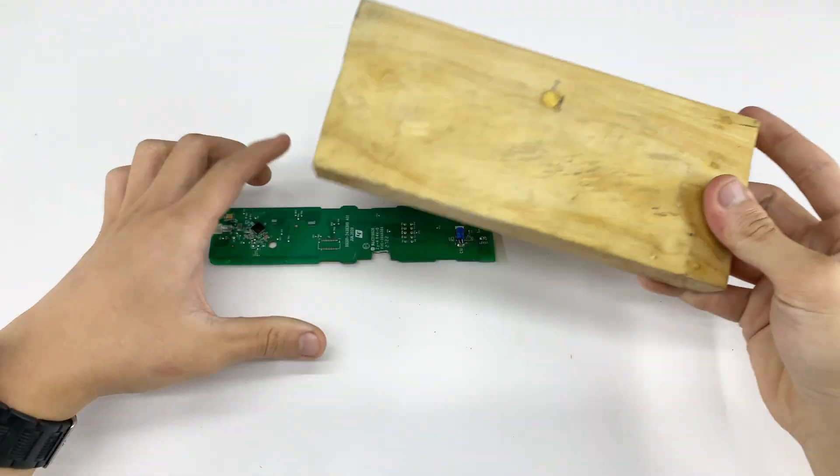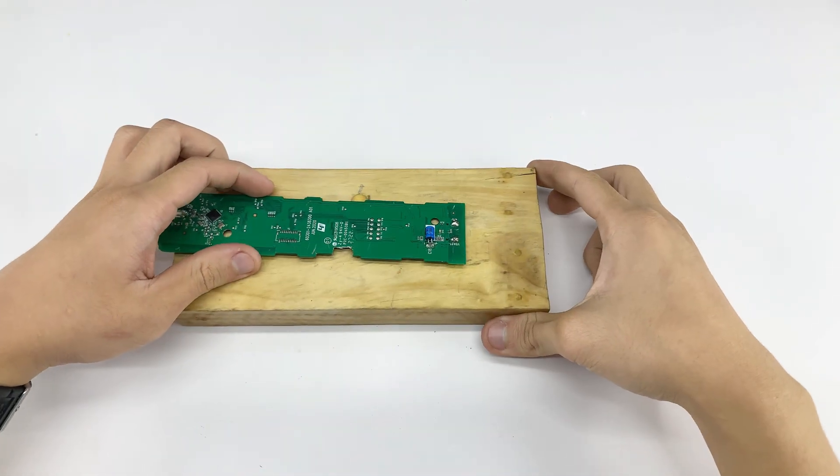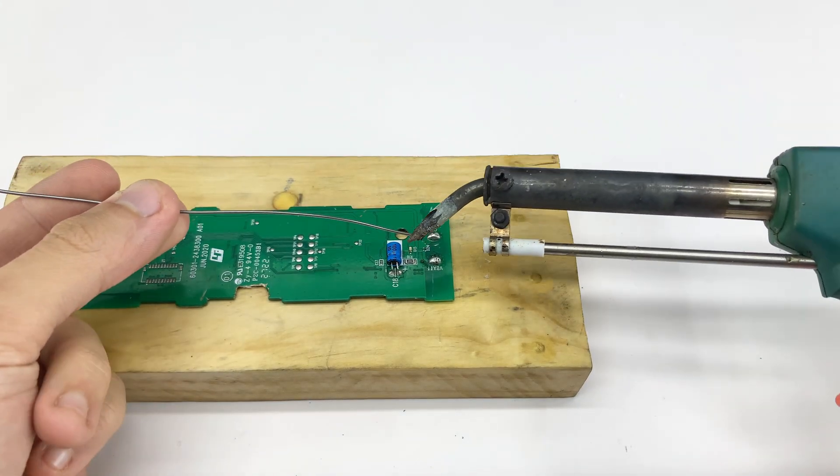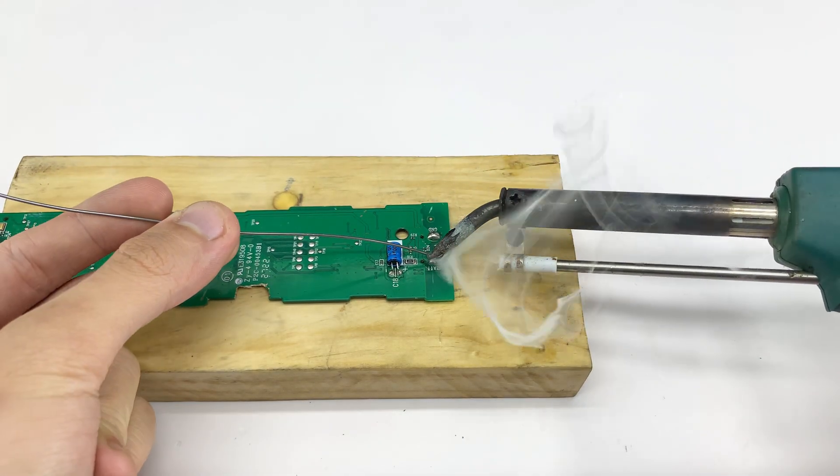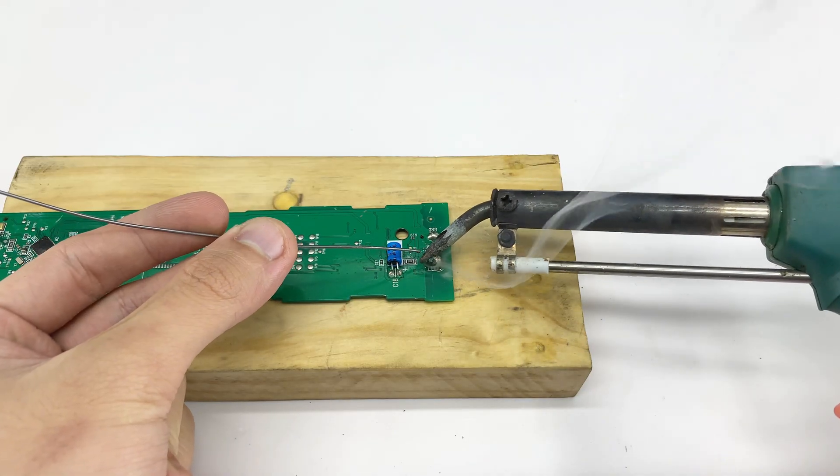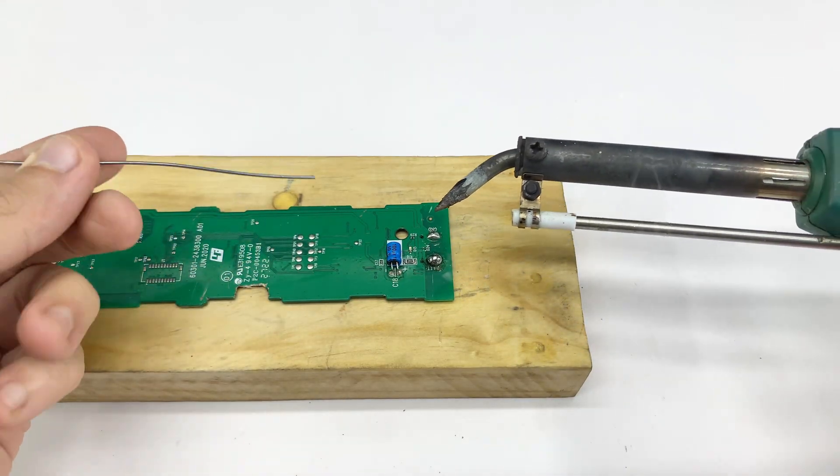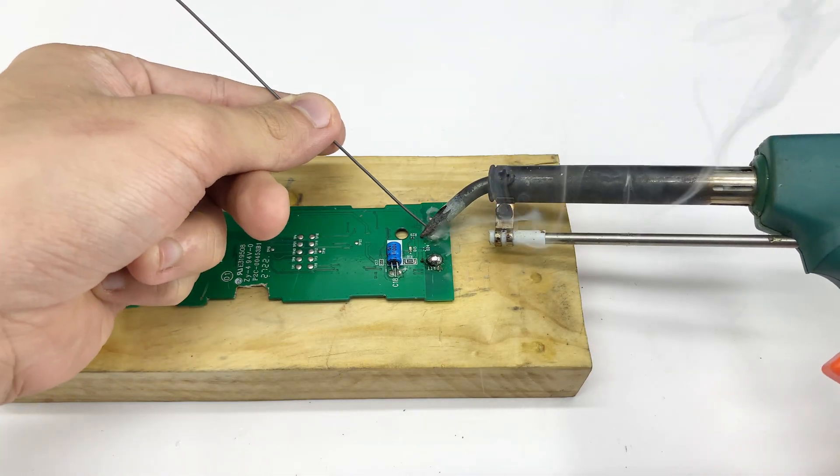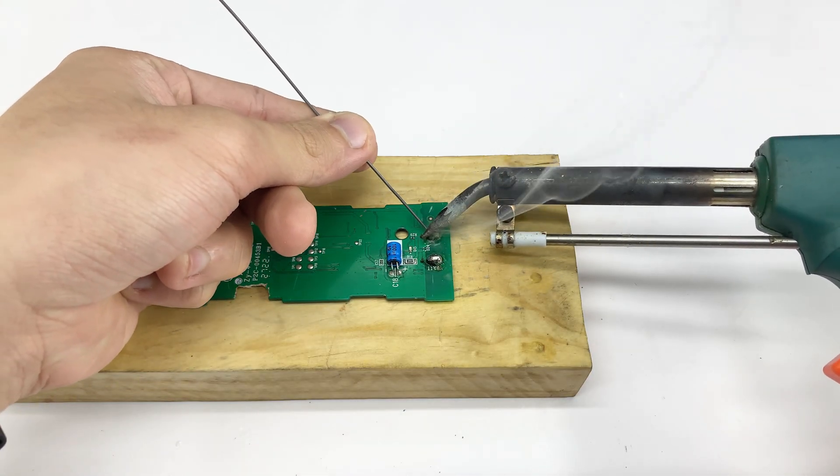Next, I'm placing our circuit board onto a small wooden block for stability, which makes it easier to work on. I'll use my soldering iron and some solder to create strong, reliable connections here. I'm focusing on these two specific points on the board because they're ideal for connecting our antenna wires due to their existing solder pads.